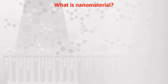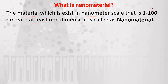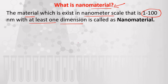So, first of all, what is a nanomaterial? We have seen nanoscience and nanotechnology. A nanomaterial is a material which exists at nanometer scale, and that scale is 1 to 100 nanometers. If at least one dimension of a material is at nanometer scale, then that material can be referred to as a nanomaterial. There may be one dimension, two dimensions, or three dimensions, and according to that the nanomaterials will be classified. Nanomaterials are larger in size compared to a single atom, but smaller than bacteria or cells.